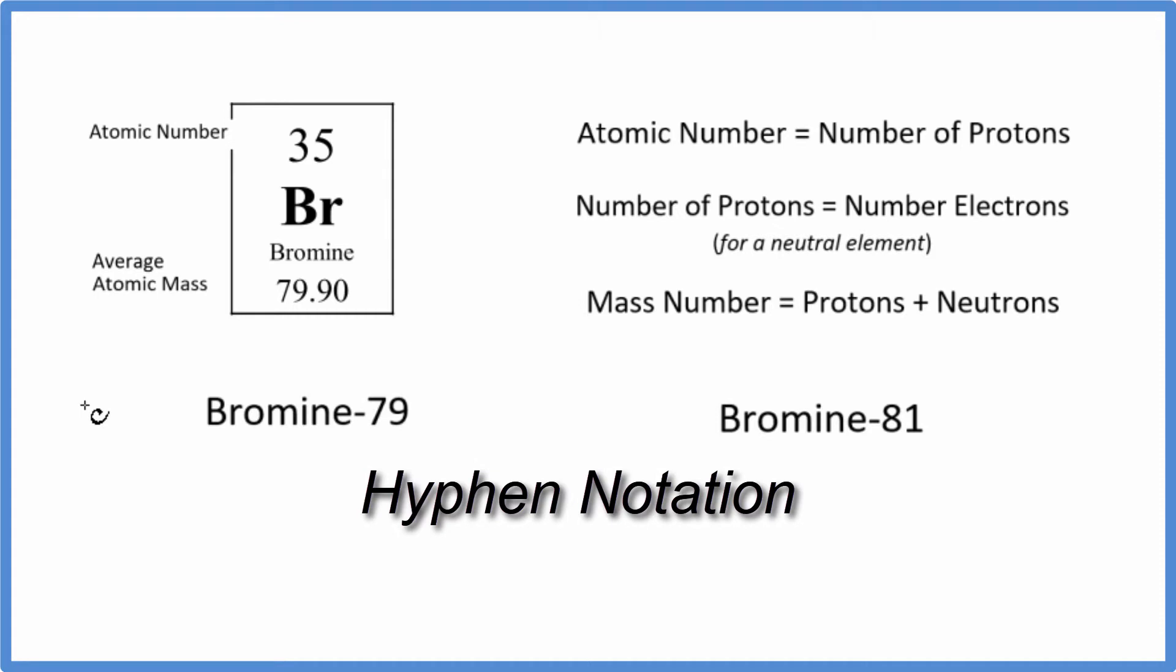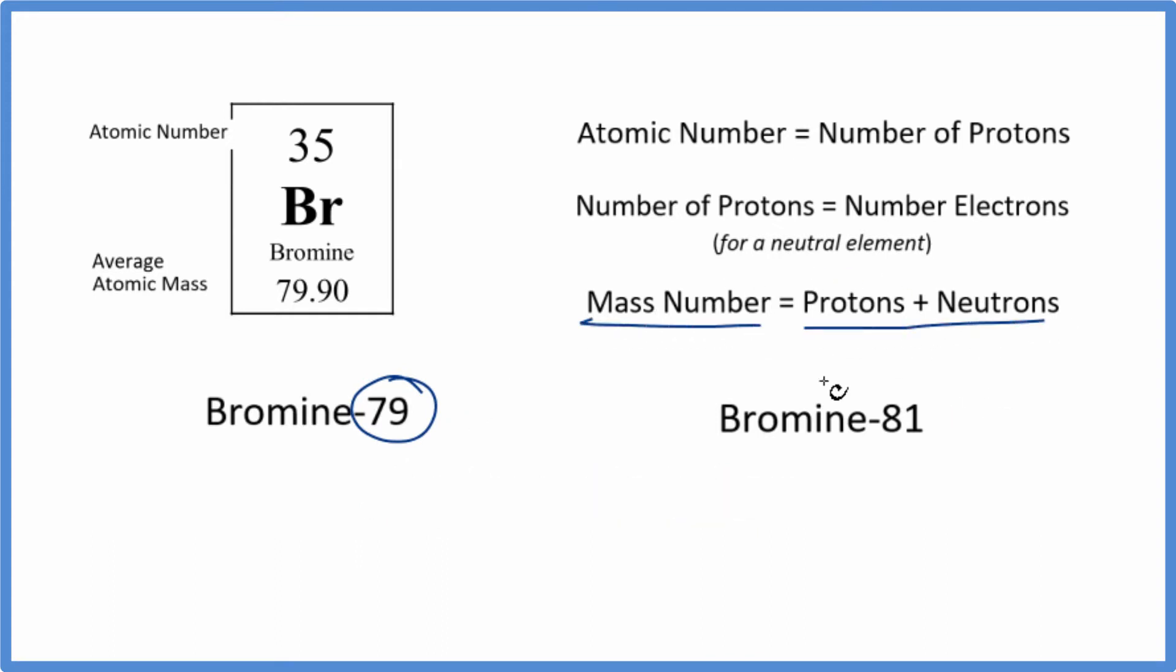This notation here is called hyphen notation. With hyphen notation, this number here, the 79, tells us the mass number—the number of protons and neutrons for the isotope. So for bromine, we have these two isotopes, 79 and 81.